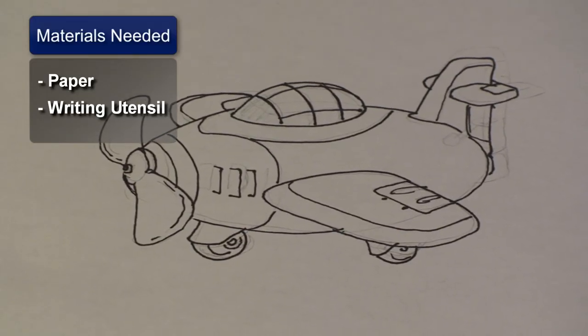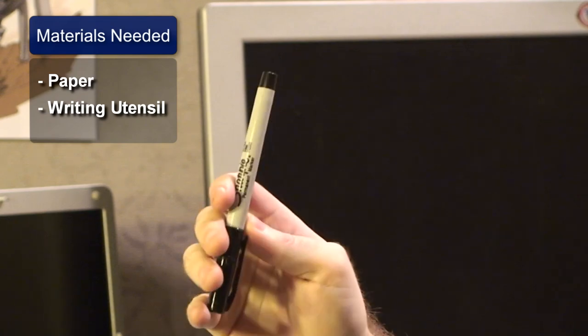First, you're going to want to get some paper and a writing utensil. Now to save time, I've already roughed this image out with pencil. Let's get started.